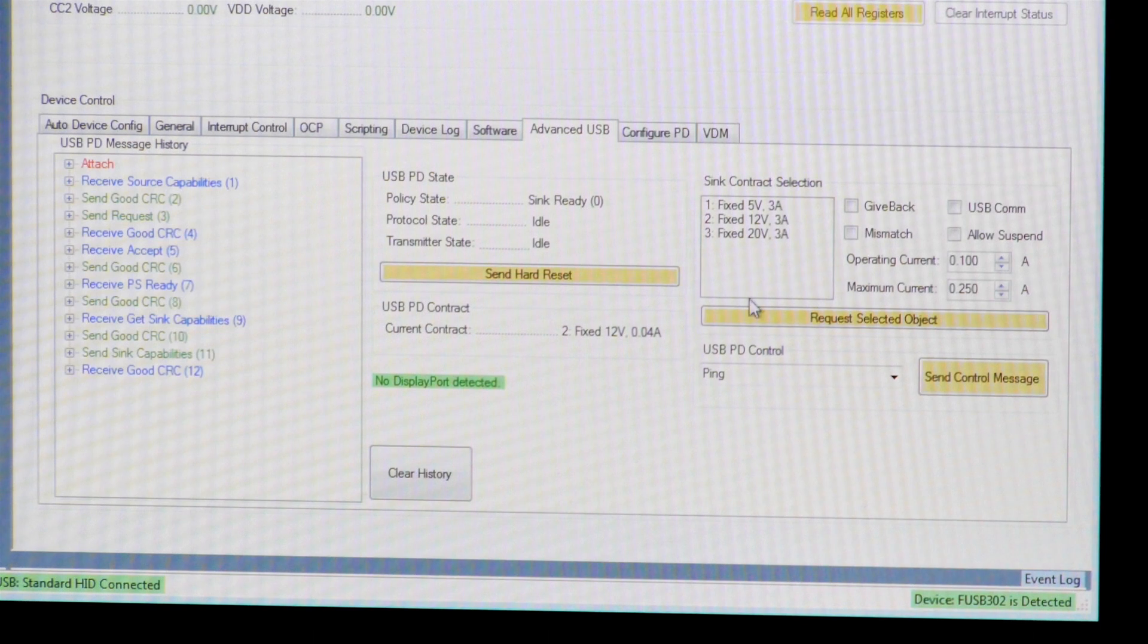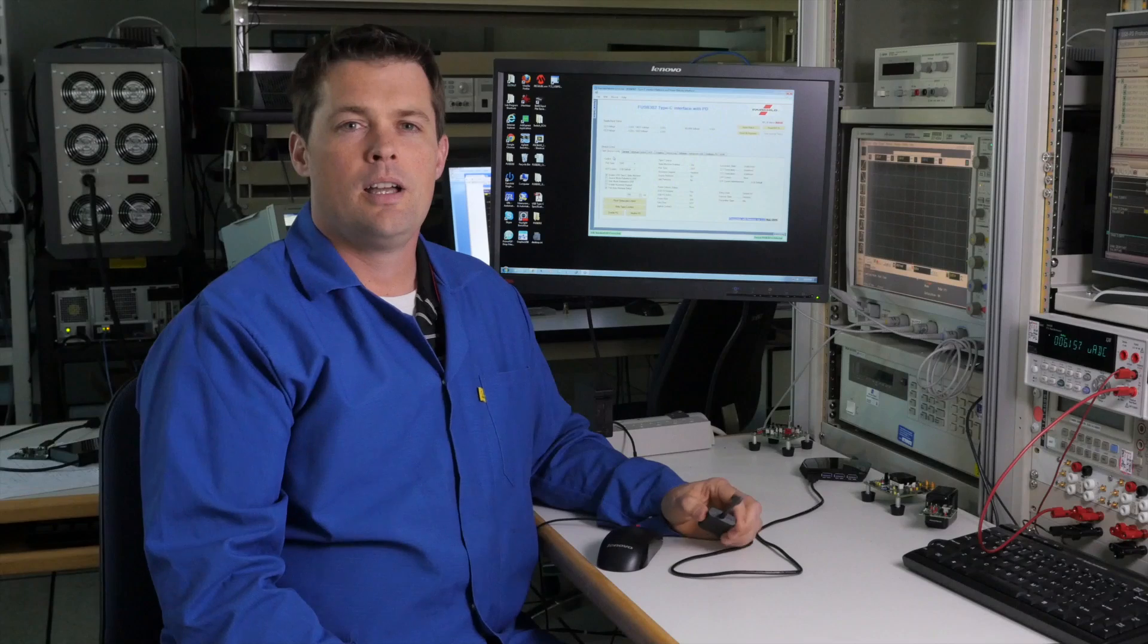If we wanted to select a different voltage, we could make a new request. In this case, we will request 5 volts.